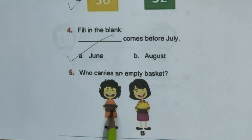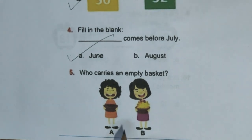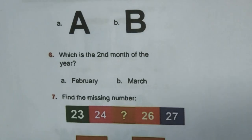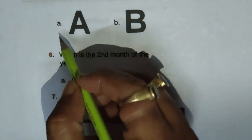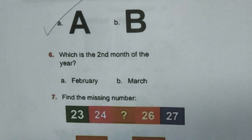Question 5: Who carries an empty basket? This girl is carrying an empty basket and this other girl is carrying something in the basket, hence option A is the right answer. Question 6: Which is the second month of the year? Obviously February, so option B is right.